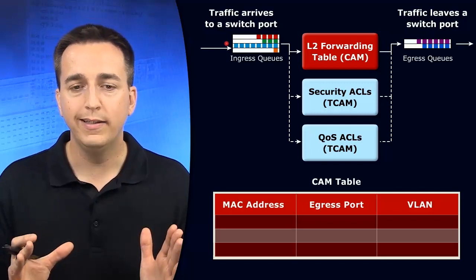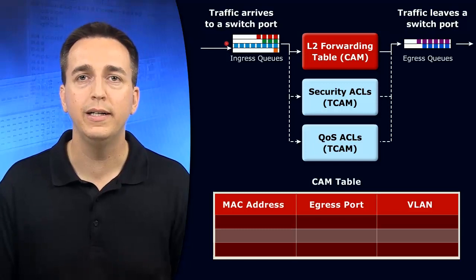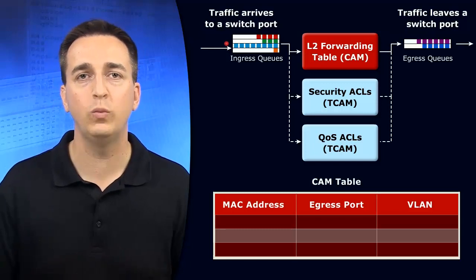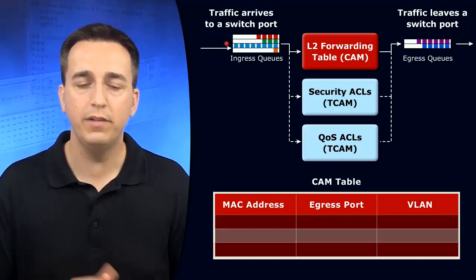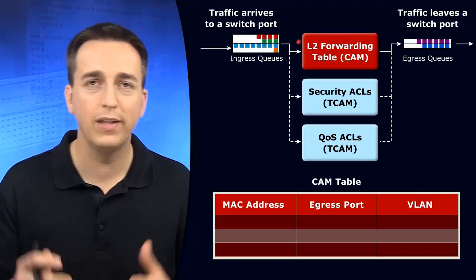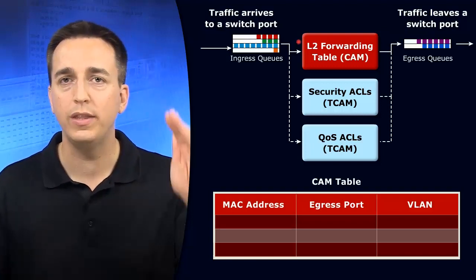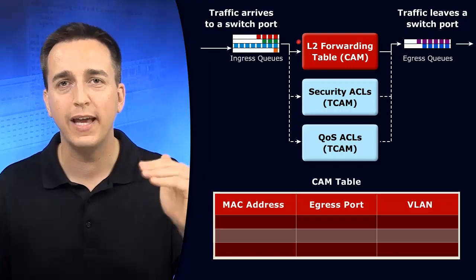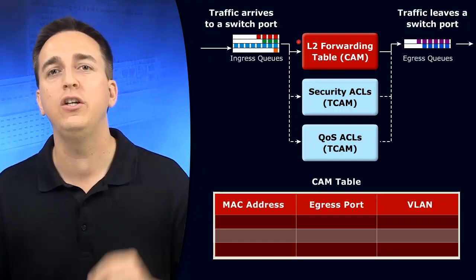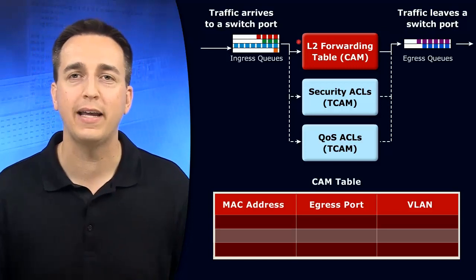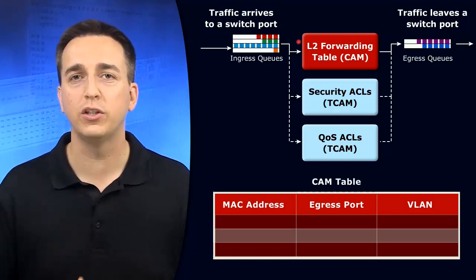When we dive inside the switch, we see CAM tables and TCAM tables. The CAM table is the Layer 2 forwarding table — it is the table with the MAC address entries, the port we can utilize to reach that MAC address, and the VLAN the port is associated with.